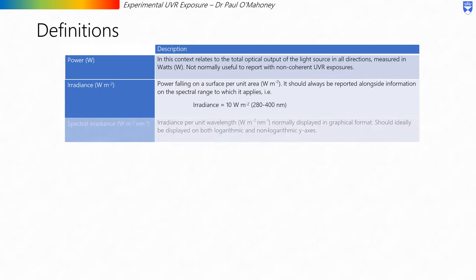Going further, we have the spectral irradiance, which is the irradiance per unit wavelength, measured in watts per meter squared per nanometer, normally displayed in graphical format. This should ideally be displayed on both logarithmic and non-logarithmic y-axes, for reasons that will become apparent in the next slide.